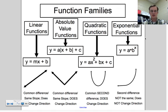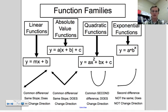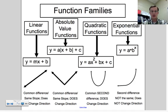Here you can see a little graphic organizer. We have linear functions, absolute value, quadratic, and exponential. Each one of these has its own specific algebraic characteristics and its own graphic. And these down at the bottom are when you look at the tabular data — looking at it in a table. So these are the different parent functions of each individual function family.